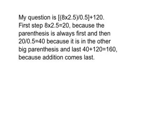My question is 8 times 2.5 divided by 0.5 plus 100. The first step is 8 times 2.5 equals 20, because parentheses is always first. Then 20 divided by 0.5 equals 40, because it is in the other big parentheses.